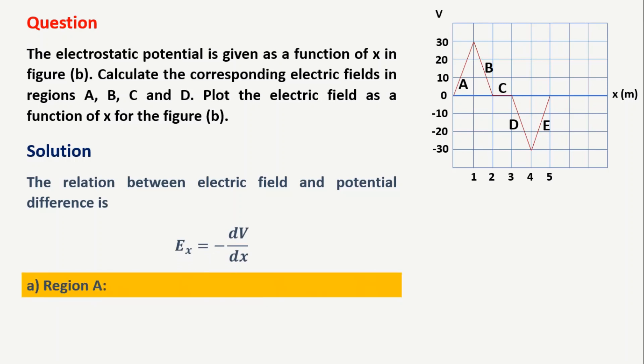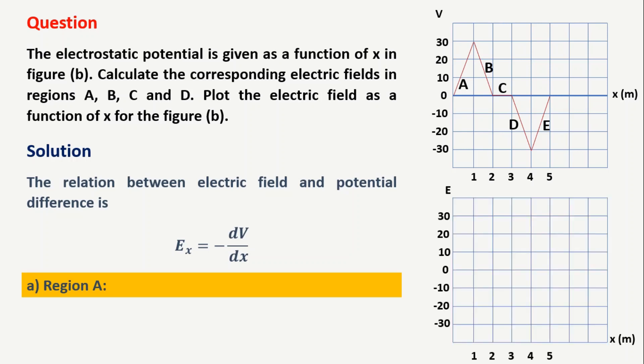Let us work out for region A. The voltage goes from 0 volts to 30 volts. So the change in voltage will be 30 minus 0, which is 30 volts. E_x equals minus dV by dx, so minus 30 divided by 1, giving minus 30 volts per meter. Let us represent this electric field in the E versus x graph — up to 1 meter, the electric field remains constant at minus 30 volts per meter.